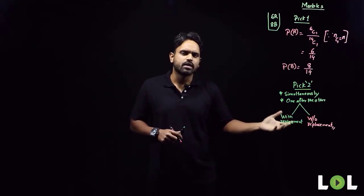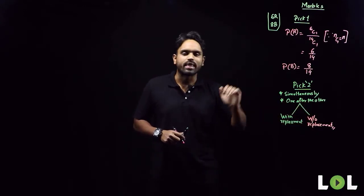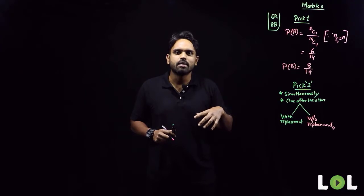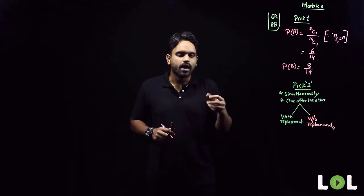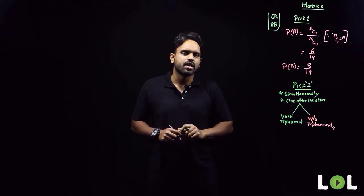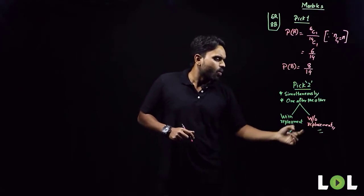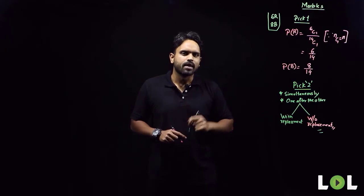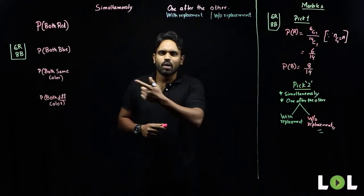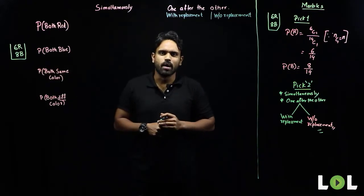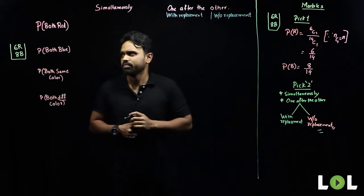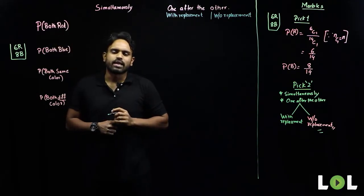With replacement: the characteristics of the bag remained the same — there were fourteen marbles all the time. One after the other without replacement: I put my hand into the bag, take out a marble, have a look at its color, drop it outside the bag, then pick another marble. When I pick the second time, the characteristics of the bag have changed — the total has reduced. Let's take up examples on picking two marbles from a bag of six red and eight blue.